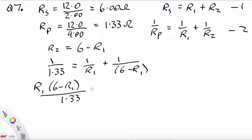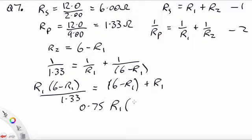So R1 times 6 minus R1 over 1.33 equals, that will be 6 minus R1 plus R1. So now the 1 over 1.33 is just 1 over 1 1/3, which is 3 quarters. So we have 0.75 times R1 times 6 minus R1 equals 6 minus R1 plus R1 is just 6.